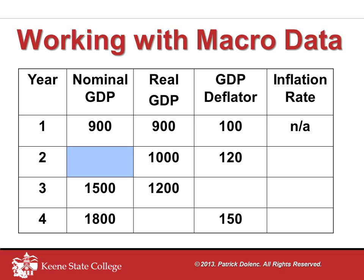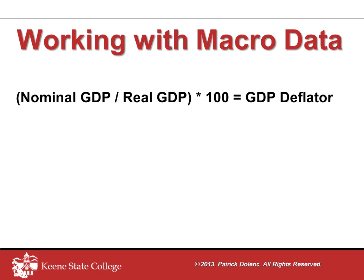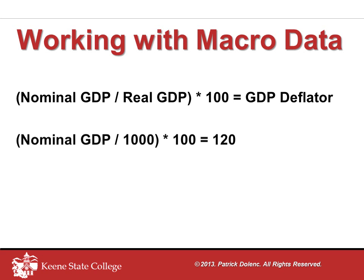We'll start by solving for the missing blue cell — here we're looking for nominal GDP. Returning to the relationship: nominal GDP divided by real GDP, times 100, equals GDP deflator. We'll substitute 1000 in for the real GDP value and 120 in for the GDP deflator value, and then solve for nominal GDP.